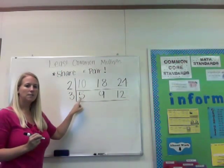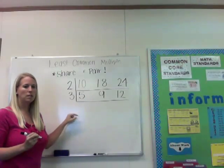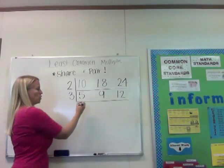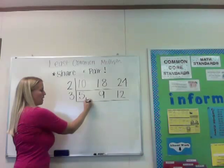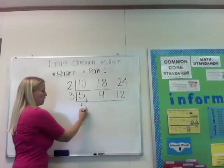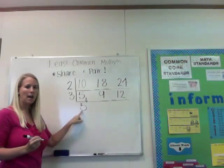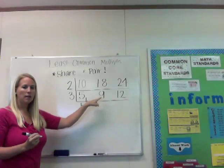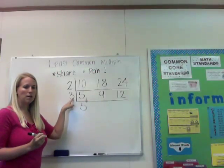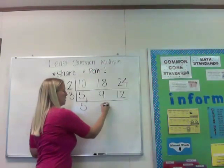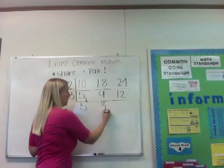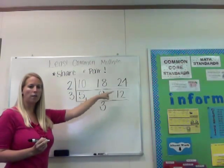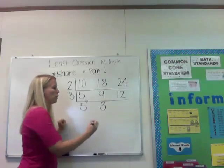Since 5 divided by 3 is a decimal answer, we're going to leave it alone and just bring the 5 down. 9 divided by 3 is 3, and 12 divided by 3 is 4.